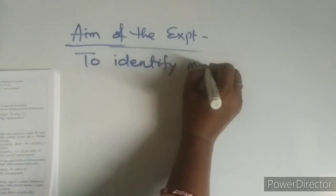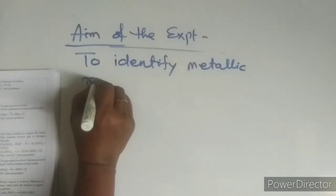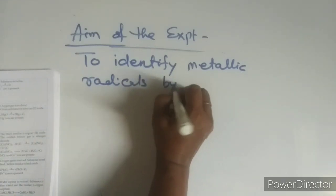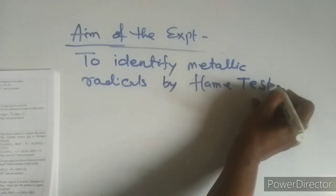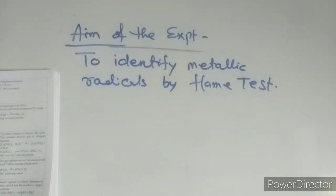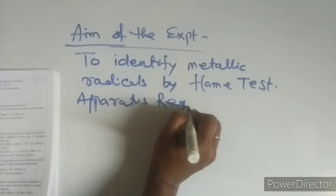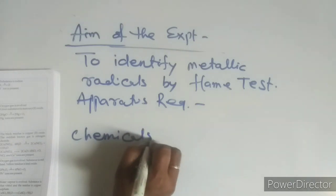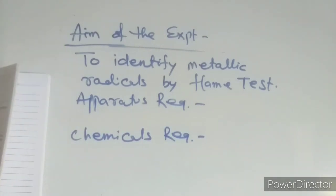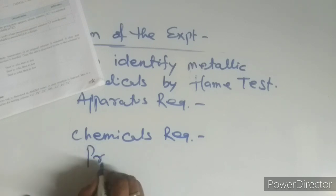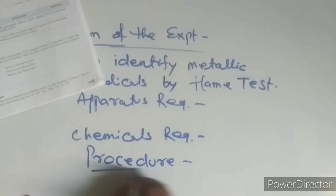Experiment five: to identify metallic radicals. Metallic radicals are positive radicals — this is identification by flame test. From the color of the flame we can identify what cations or radicals are present. So here again you will have apparatus required, chemicals required, and also a procedure section — you have to mention the procedure for this experiment.